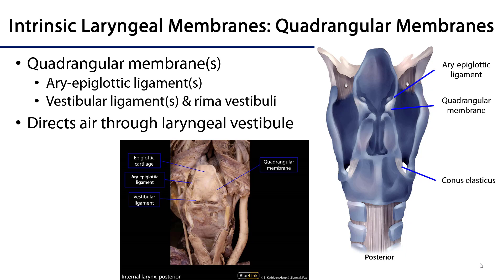The quadrangular membranes are a pair of membranes — left and right — that sit at the superior aspect of the larynx. They have two constituent parts. The first are the aryepiglottic ligaments, named for their attachments: they run from the arytenoid cartilage to the epiglottic cartilage, one on each side. When invested with mucosa, these are the aryepiglottic folds, making up the lateral aspect of the laryngeal inlet.